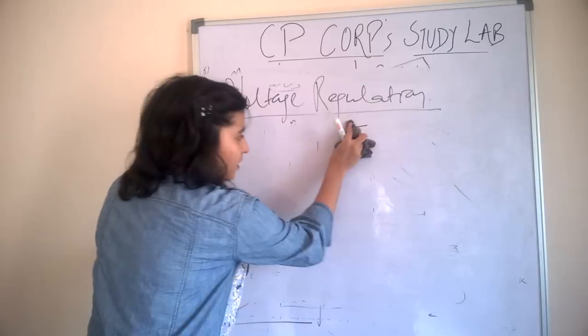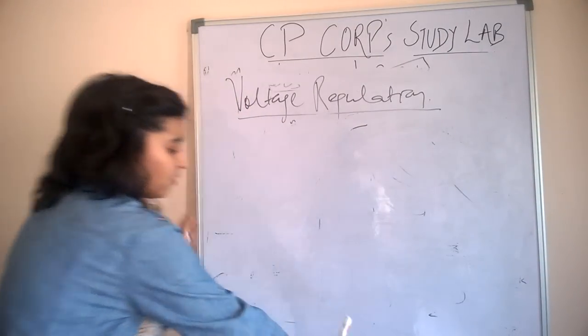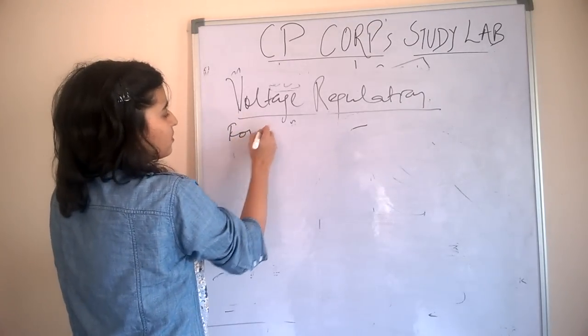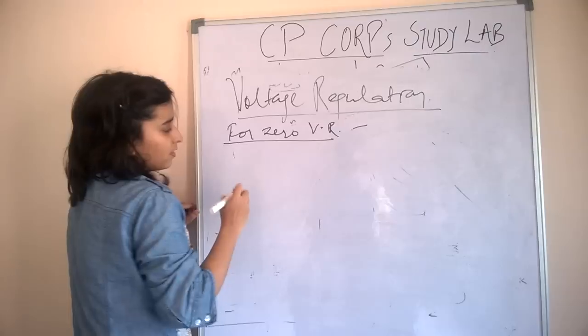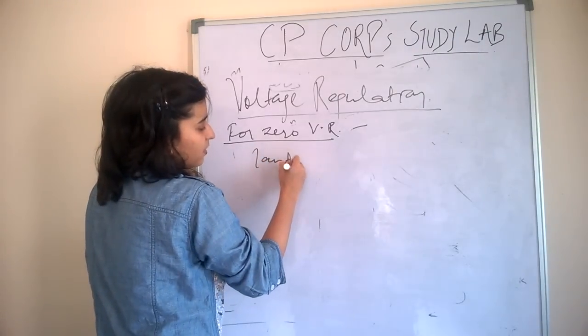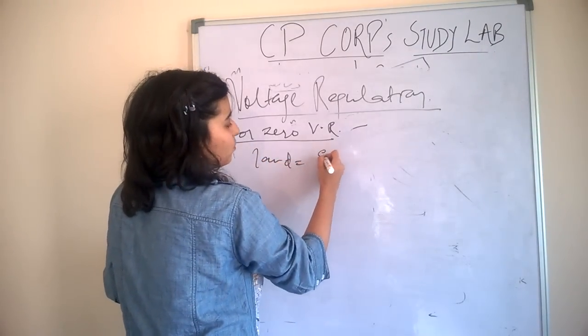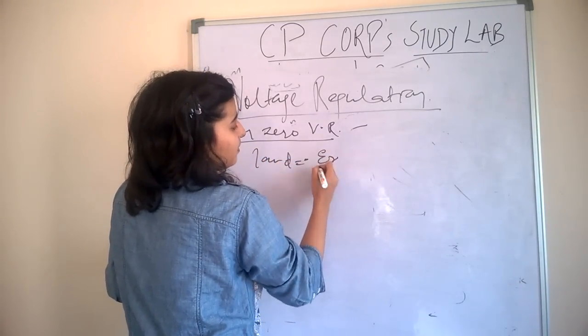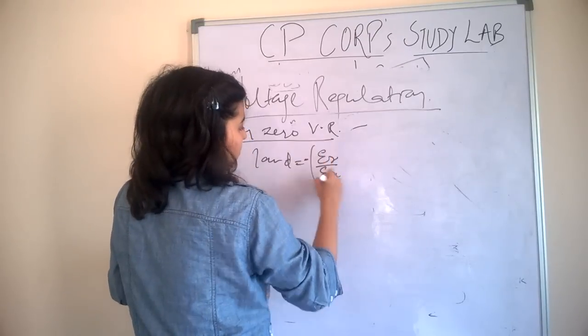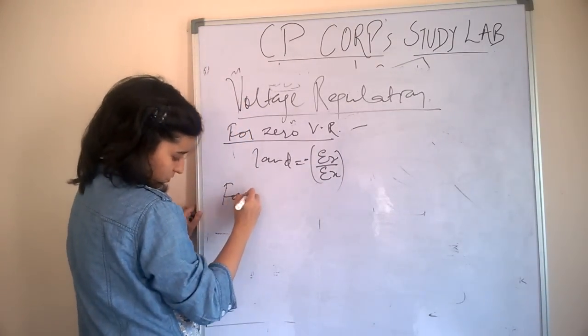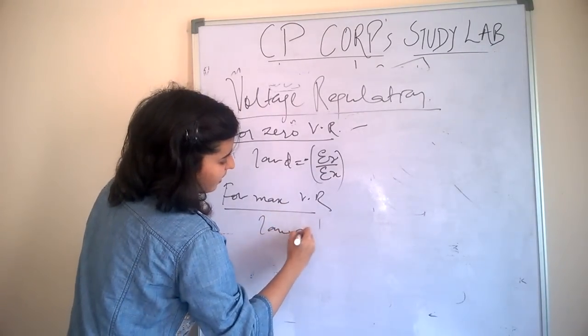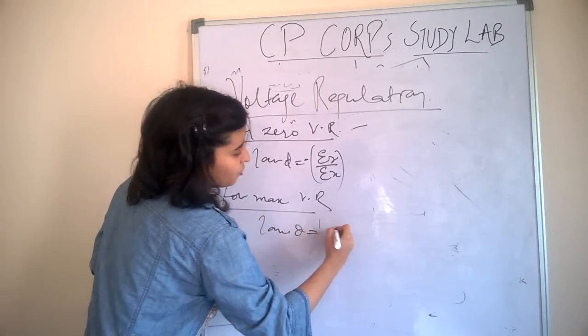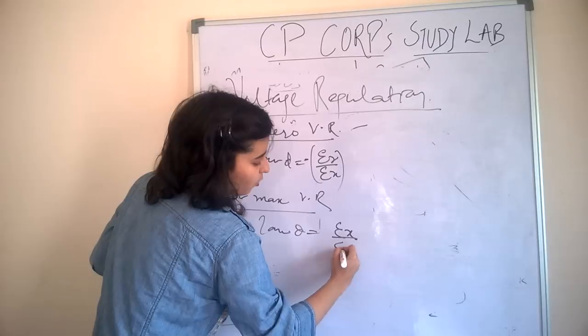For zero voltage regulation, tan θ should be equal to -R/X. And for maximum voltage regulation, tan θ should be X/R.